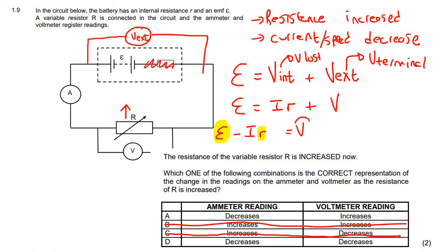So if we want to see what's going to happen to V, all that we really need to know is what's going to happen to I. So we said just now that I, which is the current, is going to decrease. So I will become less.